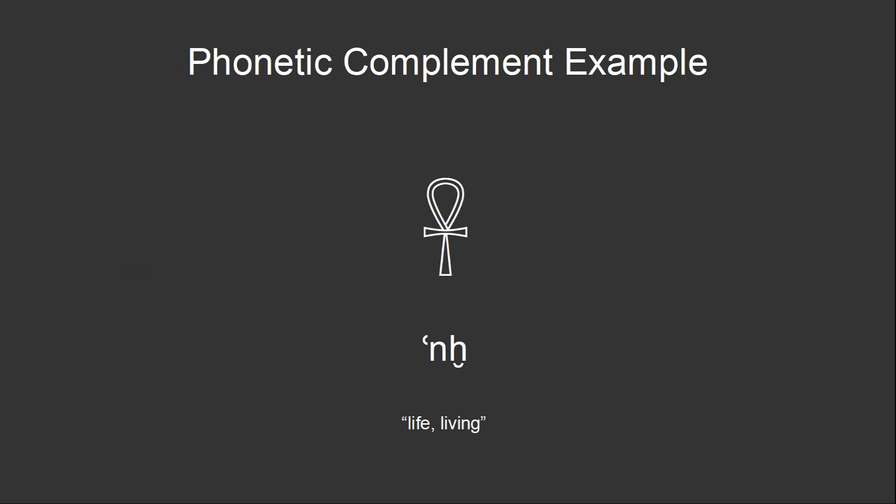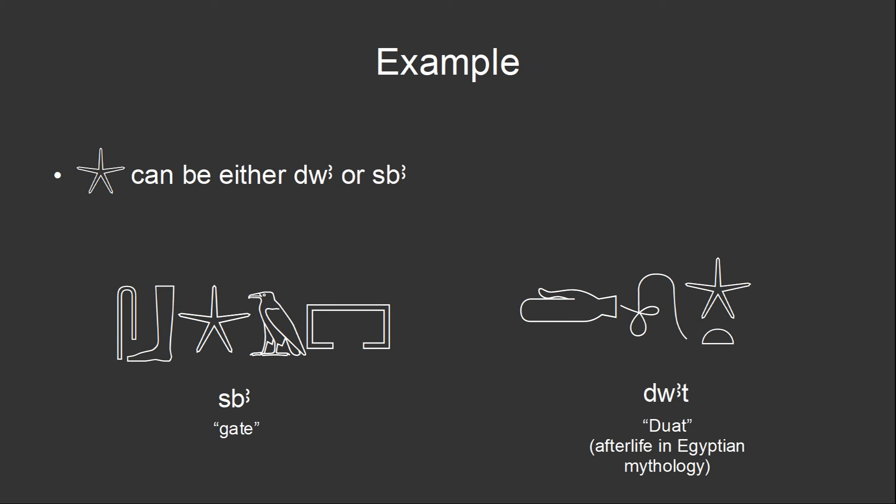As an example, the word ankh, meaning life or living, can be written with just the ankh sign, or it can be written with the ankh sign, followed by two monoliterals representing the sounds N and KH. Occasionally, a symbol can be pronounced multiple ways, and the phonetic complement serves to distinguish which reading is intended. Most of the time, though, only one reading is possible, and the phonetic complements only serve to remind the reader of what that reading is.